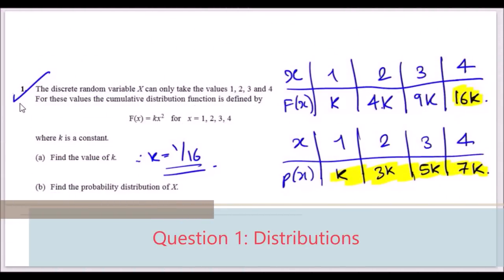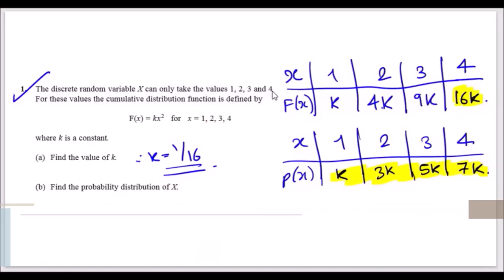The discrete random variable X can only take values 1, 2, 3, and 4. The cumulative distribution function is defined by F(x) = kx² for x = 1, 2, 3, and 4. It's useful to draw a table with x values 1 through 4 and plug in: when x = 1, you get k; when x = 2, you get 4k; and so on.